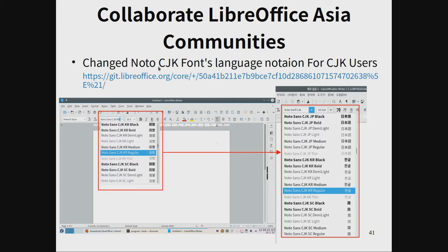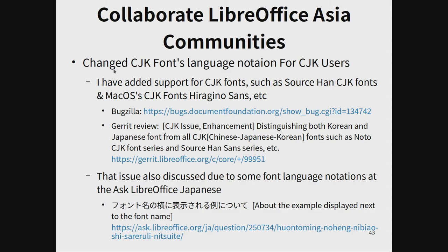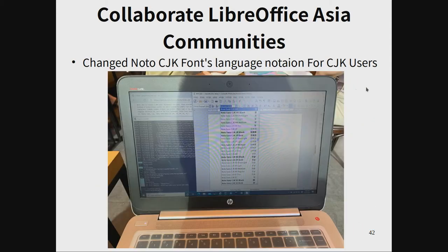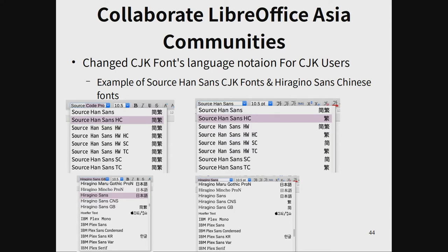I changed the note of CJK fonts' language notation for CJK users, and added support for CJK fonts such as Source Han CJK font. This issue was also discussed due to font language notation at Ask LibreOffice Japan's Japanese site. The left image shows before the fix and the right shows after — example of Source Han Sense CJK font and Hiragino Sense Chinese fonts.